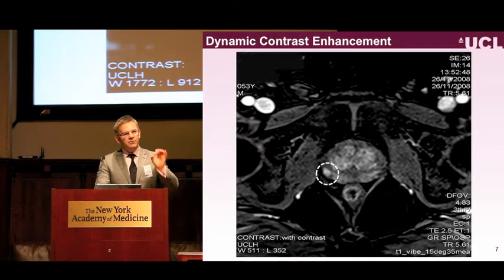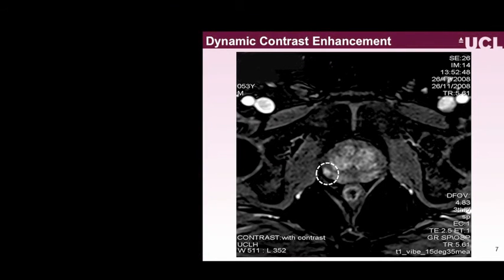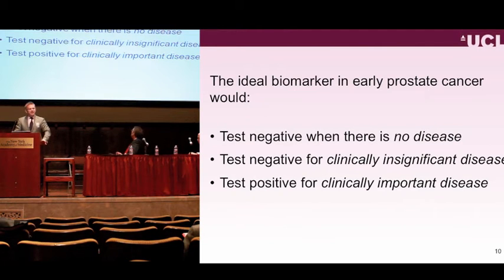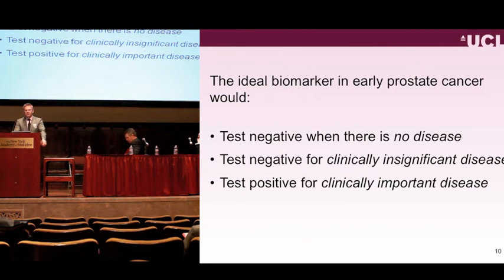If you get all three sequences, the radiologists will tell you there's about a 95% chance this is a cancer, and if you put your needle in there you'll be wrong about one time in twenty. The ideal test in prostate cancer should test negative when there's no disease, but it should probably also test negative when there's clinically insignificant disease—if we had such a test we would get over the burden of overdiagnosis and the consequence of overtreatment.